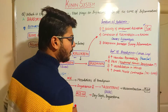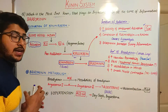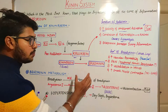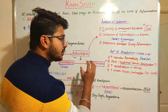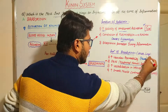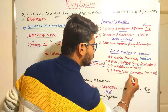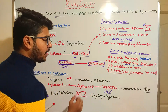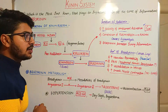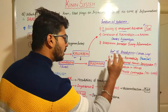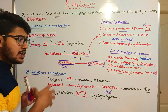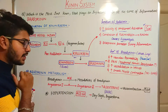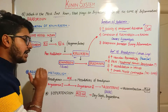In the lungs, bradykinin causes increased vasodilation in the vessels and also increases smooth muscle contraction. So bradykinin acts as a special mediator in the lungs responsible for increasing smooth muscle contraction. Now let's see what is the effect of bradykinin in the lungs and why we are concentrating on the relationship between lungs and bradykinin — we will see this under the category of bradykinin metabolism.